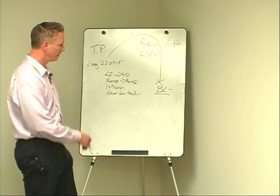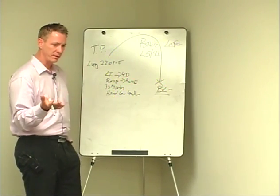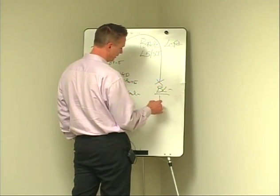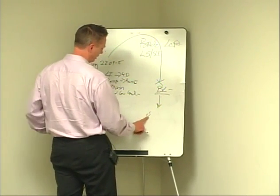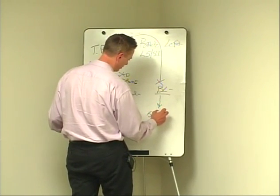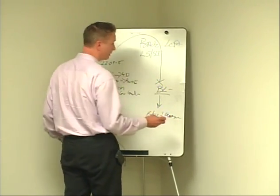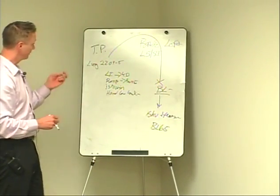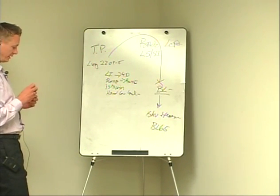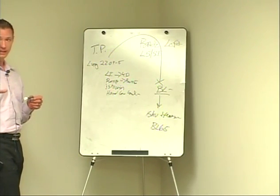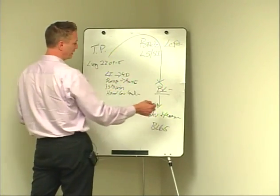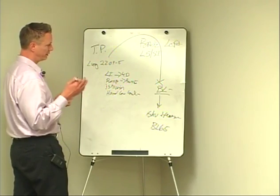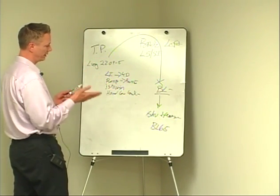Now the question is where on the bladder channel. From a TCM perspective you might think it should be the Xi-cleft point because Xi-cleft points treat pain — and you could do that. But from a Master Dong perspective, the theory says it should be on either a Ying-spring or a Shu-stream point, preferably a Shu-stream point. That would be Bladder 65 — your guide point for the back pain. The classics say Shu-stream points are for heaviness, dampness, and pain that comes and goes. That's how I was taught by those who learned from Master Dong.